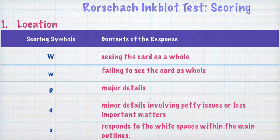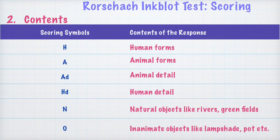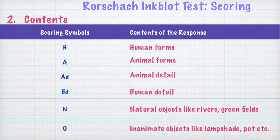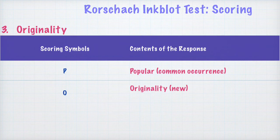The second dimension is content. Responses involving human forms are given capital H, while those involving animal forms are given capital A. Responses with animal details are symbolized as AD, and those with human details as HD. Natural objects such as rivers or green fields are symbolized as N, and inanimate objects like a lampshade or pot are symbolized as O.